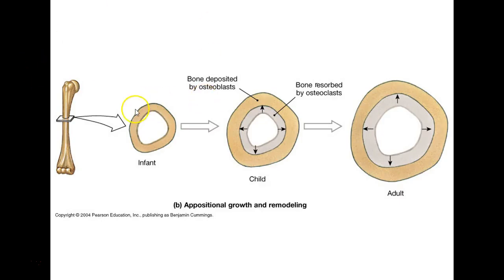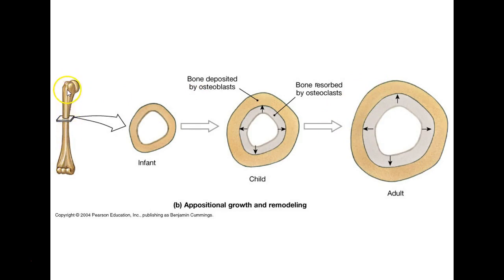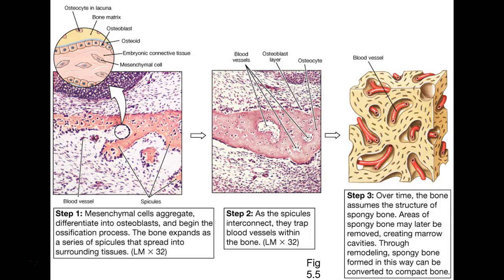Here's a long bone — we're just talking about growth here. You can see the way it's getting bigger around — that's appositional growth. Whereas if it's growing lengthwise from the epiphyseal plates, that's interstitial growth. That's just how bones grow.